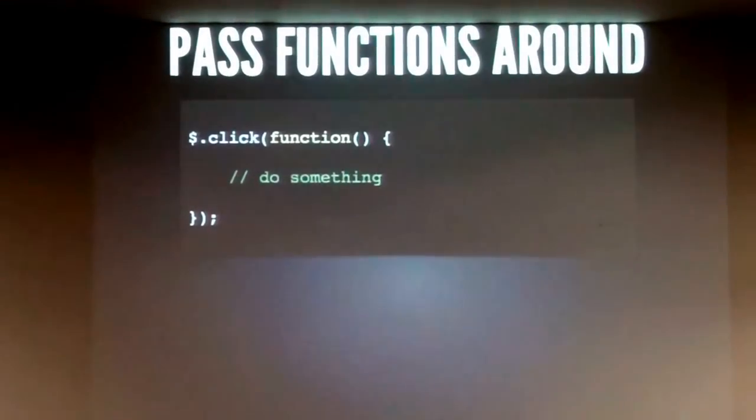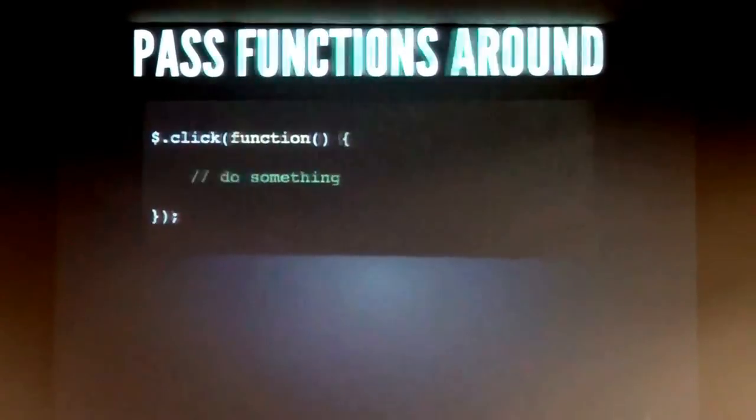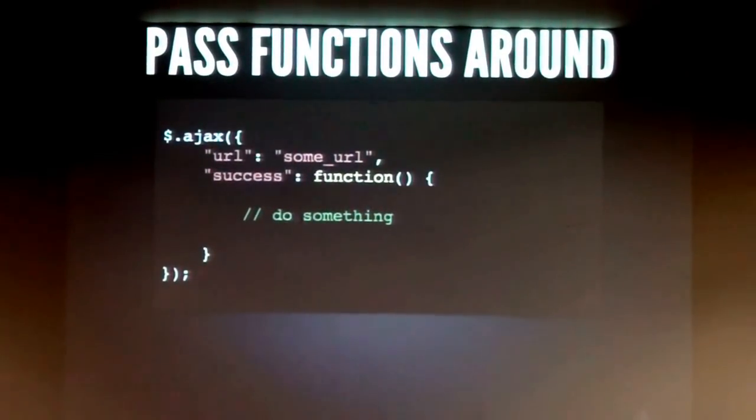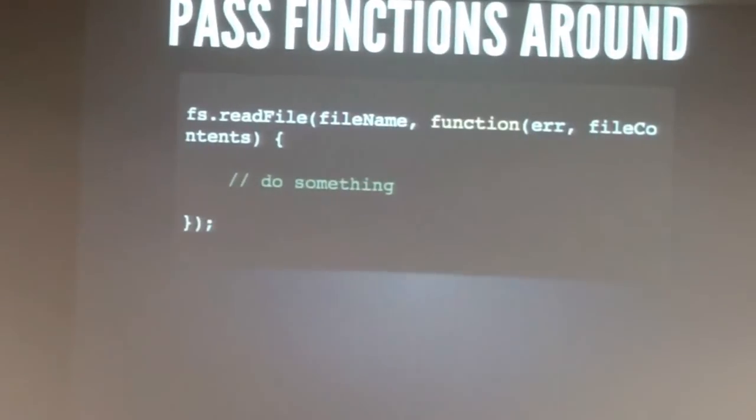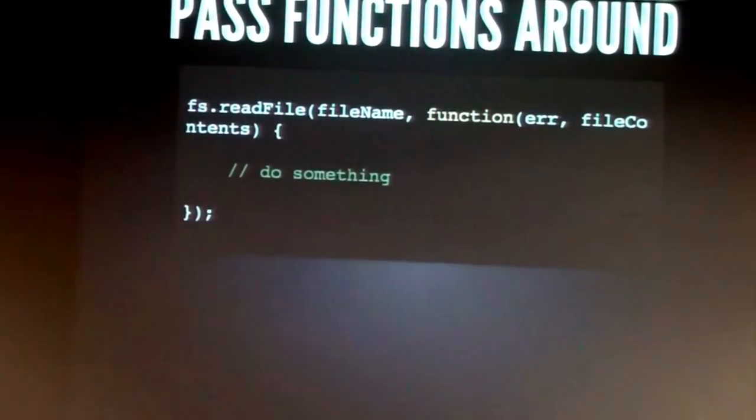This is a pattern where you're passing a function into another function. $.click is a function and you're passing another function. $.ajax — something jQuery guys are familiar with — is where you're passing a function as part of an object literal. And then the Node pattern: get a file name, I want to read this file, and when you've done going out to the disk, seeking and getting the contents, after you've finished all of that, call this function to do whatever you have to do.